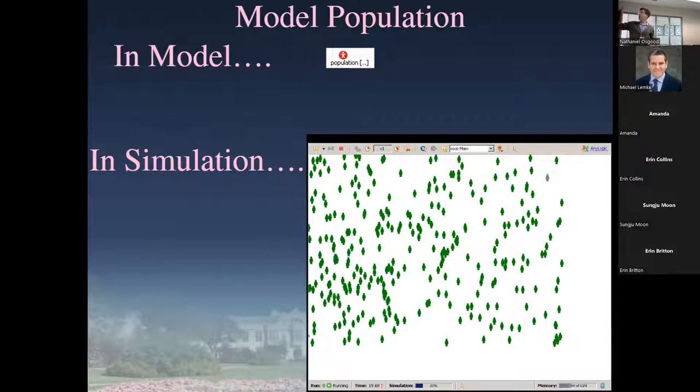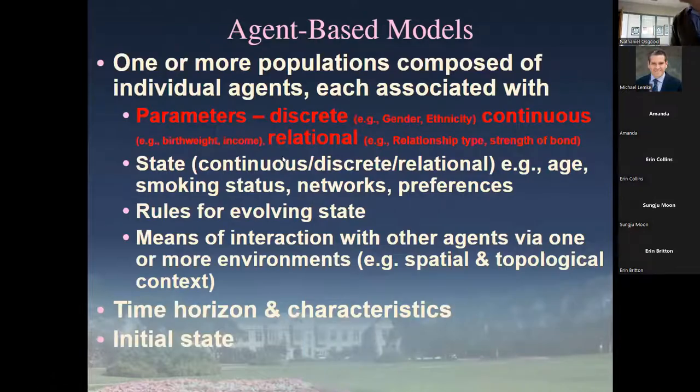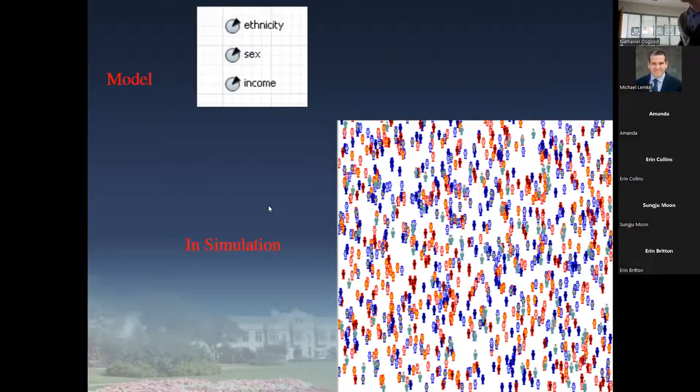When we build up the model, we'll say there's a population, and during simulation that population will include many particular individuals. When we think about parameters as specified for individuals, we might say each person in the population has a certain ethnicity, a certain sex, and a certain income.